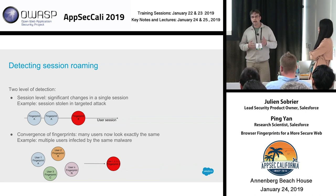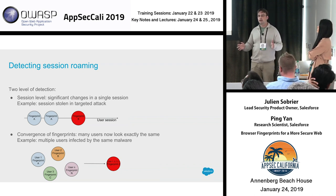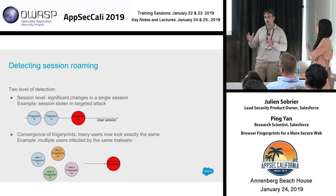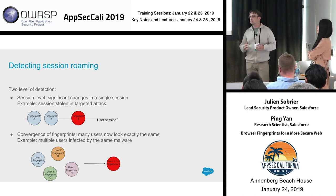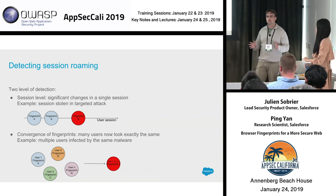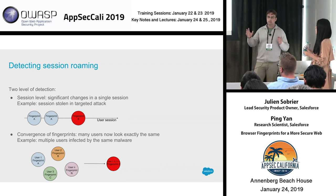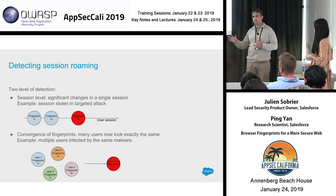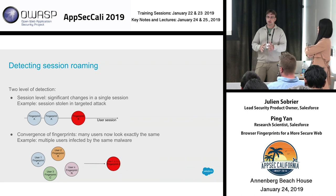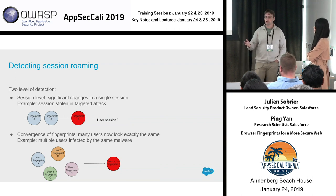When we started this project we were looking at two ways of detection at a high level. The first is looking at a single user session: we see the fingerprint is more or less the same environment, then suddenly we see a brand new fingerprint — a completely different environment — which is highly suspicious. But we can also look at many users: if different users have stable fingerprints and suddenly all converge to a new one completely different from anything seen before, that flags a mass attack with many credentials being reused or sessions stolen at once.